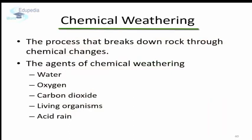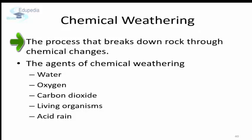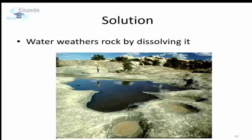Chemical weathering is the breaking up of rocks by chemical means. The broken pieces of rocks differ in composition from the parent rock. Chemical weathering is common in rocks that contain weak minerals such as salts, which easily dissolve in water and are washed away, making the rock weak and causing its disintegration. The agents of chemical weathering are water, oxygen, carbon dioxide, some living organisms, and acid rain. Chemical weathering can happen in four different ways.